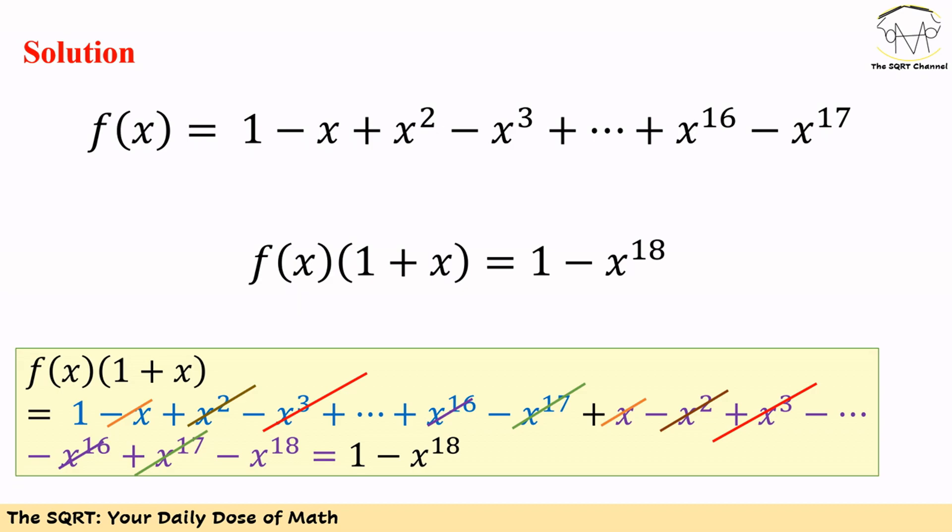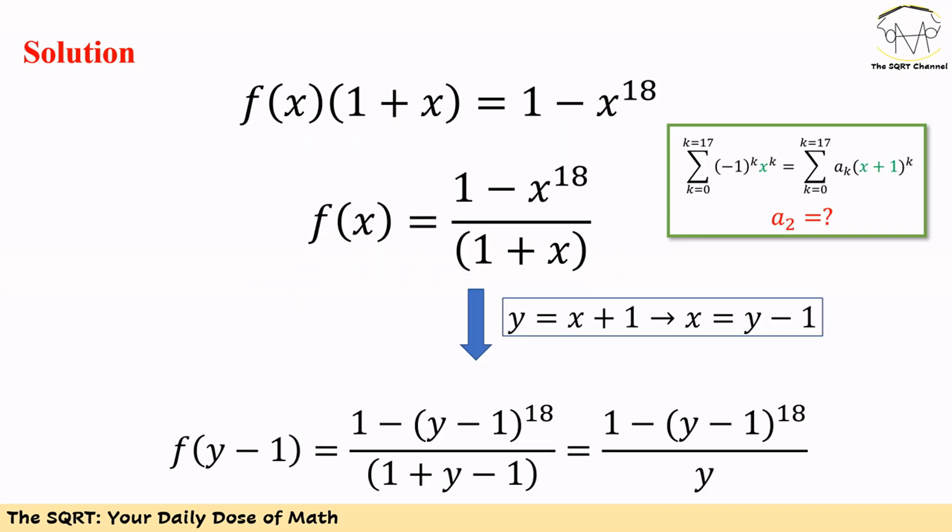We use the same color for the items that can be removed together. At the end we will have just 1 minus x to the power of 18. So we know f of x times 1 plus x is equal to 1 minus x to the power of 18.